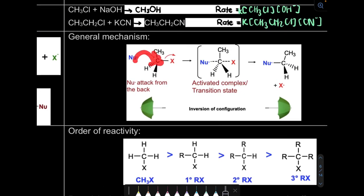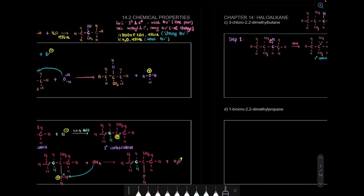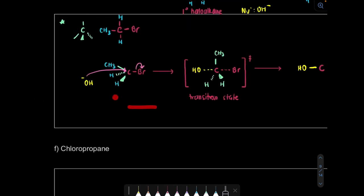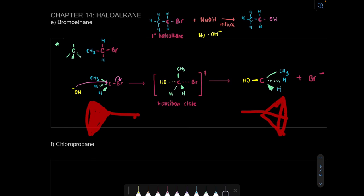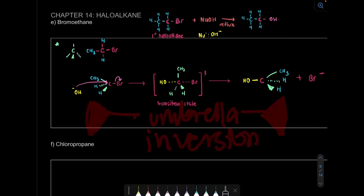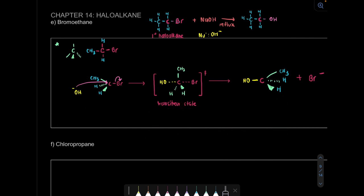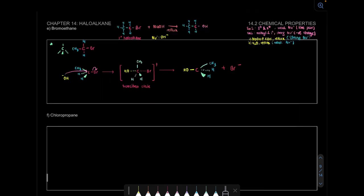Again, the nucleophilic attacks from the back, then the halogen leaves, we form a transition state, then we form a new product. So this inversion - imagine this is your umbrella. Or a broom also works. As you can see, it's already inverted. We have to show there's actually inversion - umbrella or broom both work. That's it for SN2 mechanism - we have to use 3D structure.